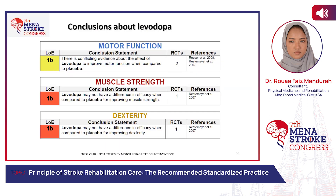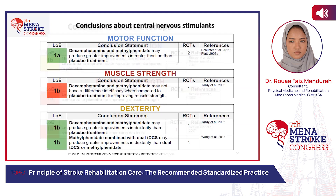In conclusion regarding other stimulants: for levodopa, there is level one evidence but conflict between levodopa and placebo. For other central nervous system stimulants like methylphenidate, level one evidence suggests it may produce greater improvement in motor function than placebo.